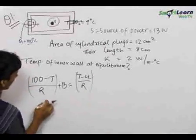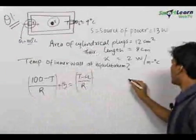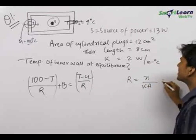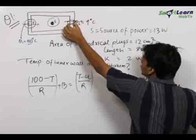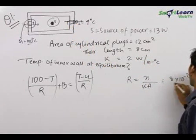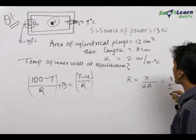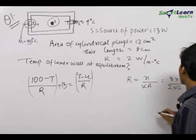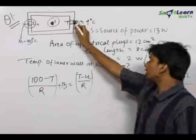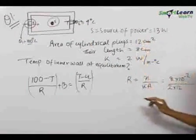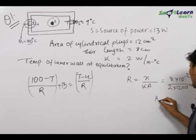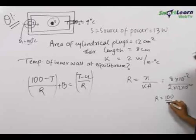On solving this, let us first find the value of R. R = X / (K × A), where X is the length through which the current travels, equal to 8 cm. K is the thermal conductivity, equal to 2. The area of cross section — which must always be taken perpendicular to the heat current — comes out to be 12 cm², that is 12 × 10⁻⁴ m². On solving, R = 100/3.